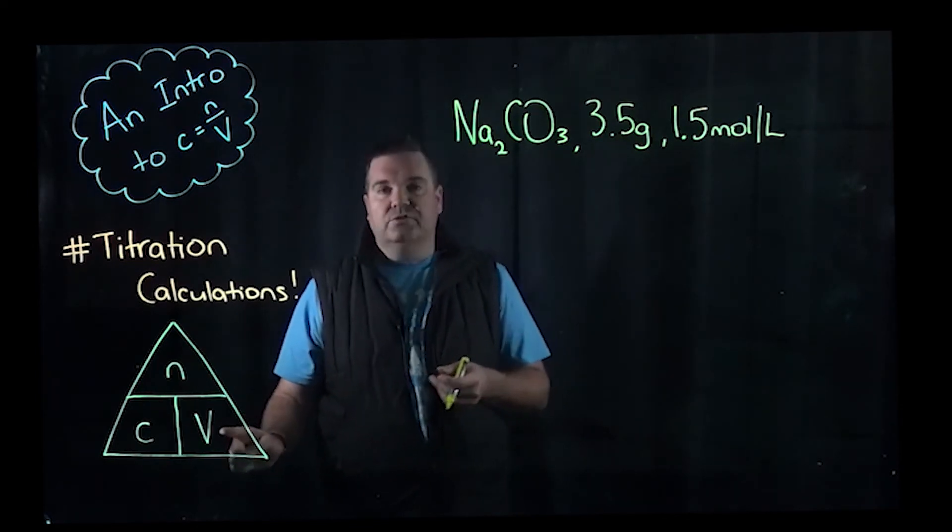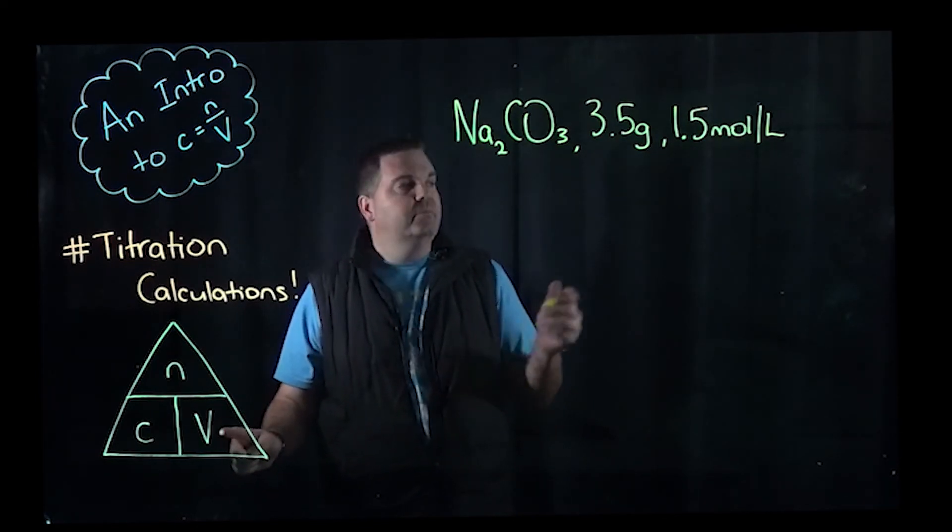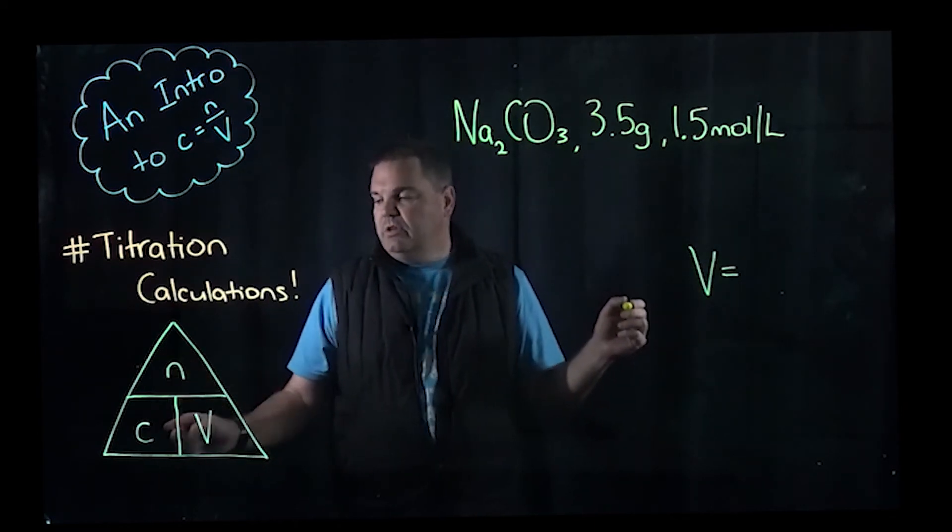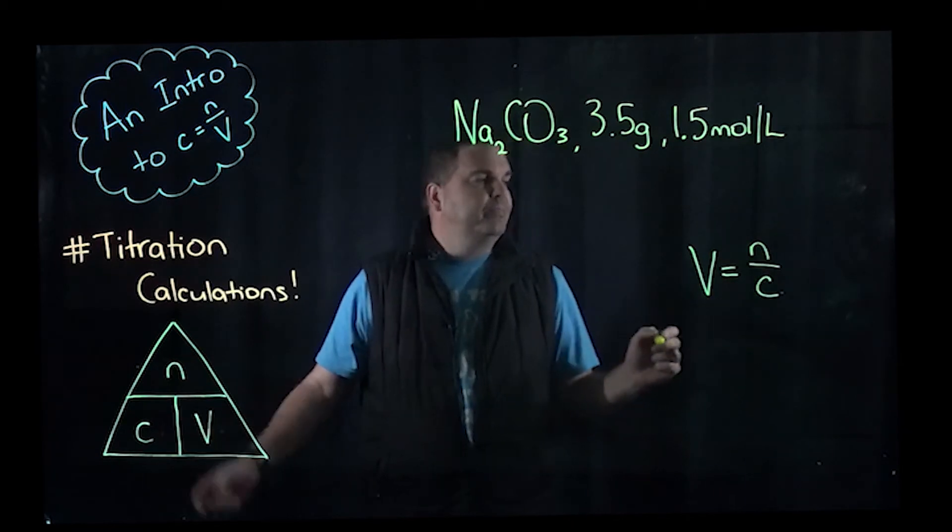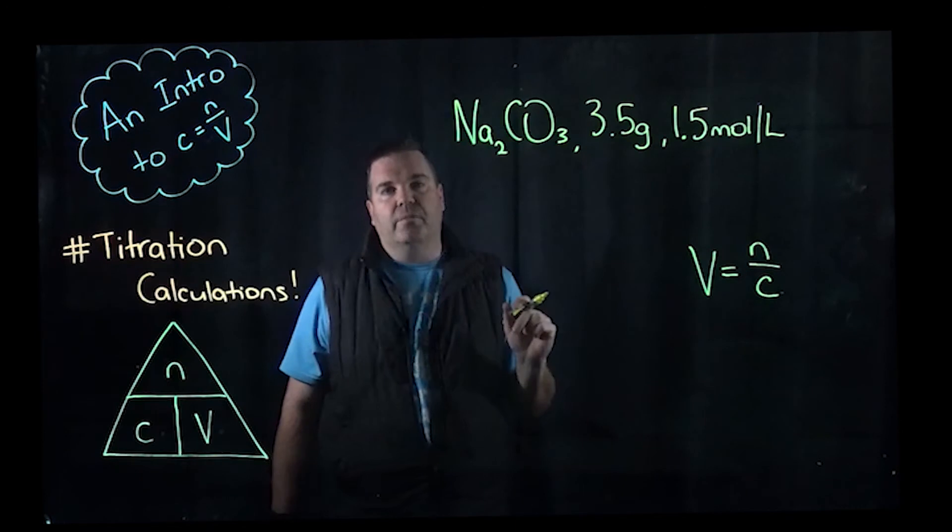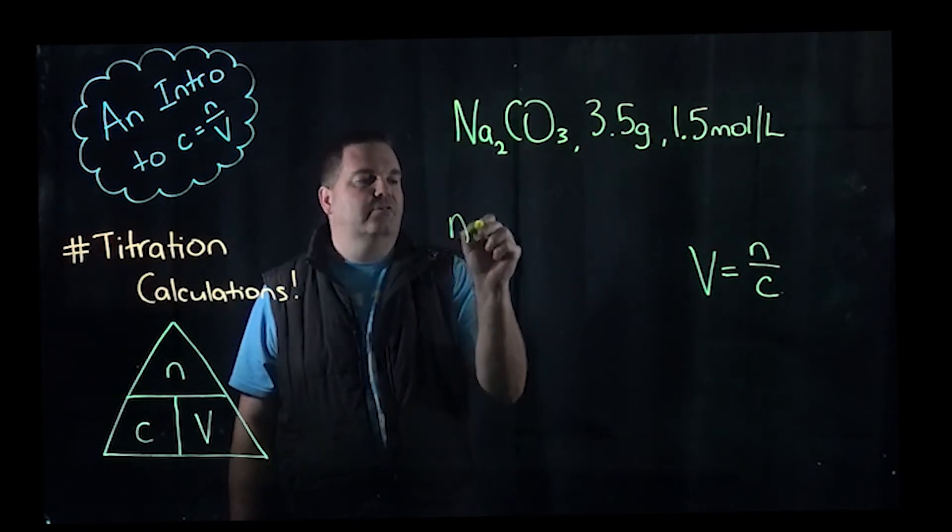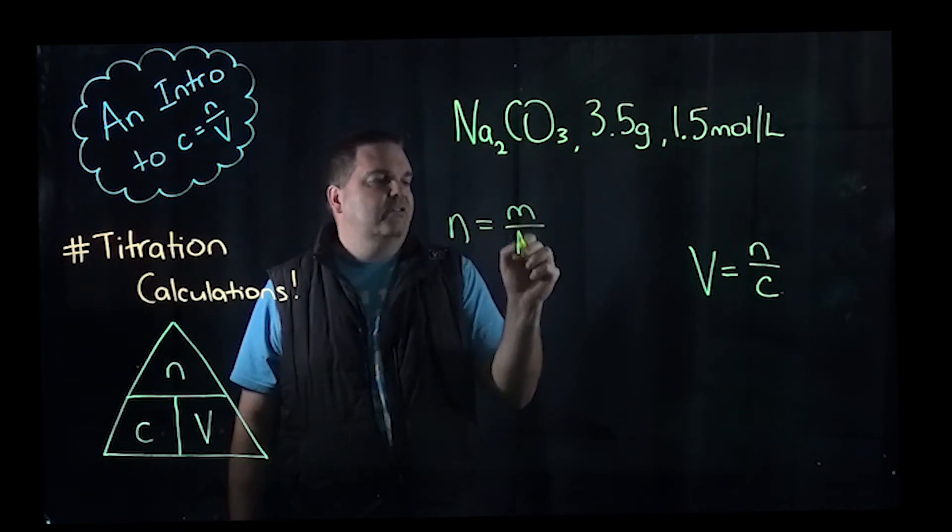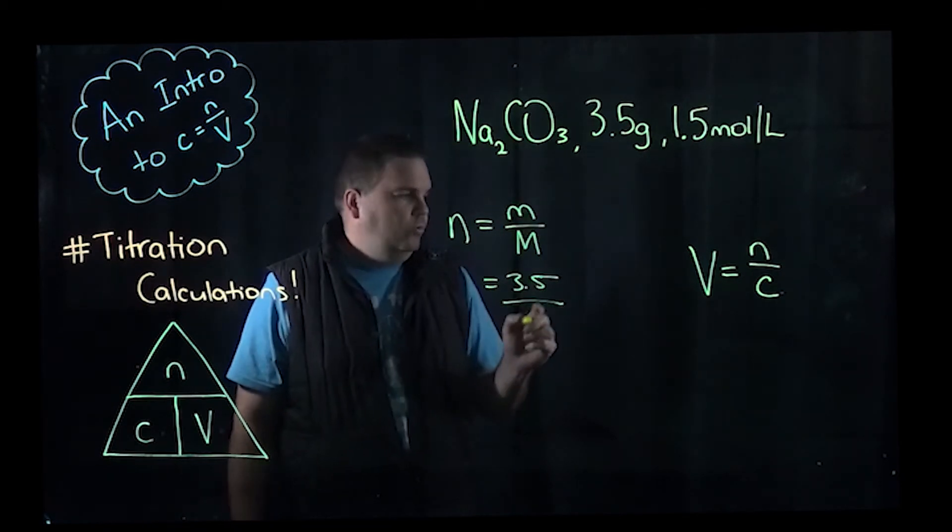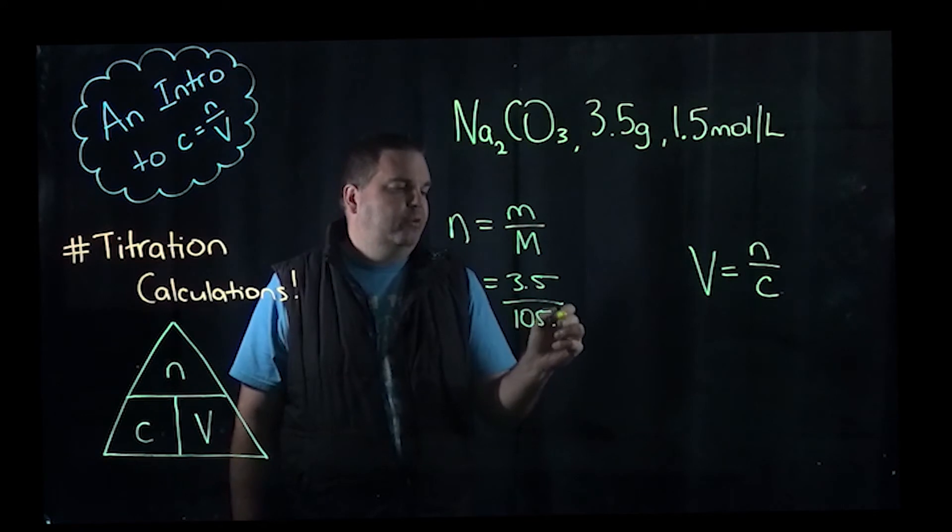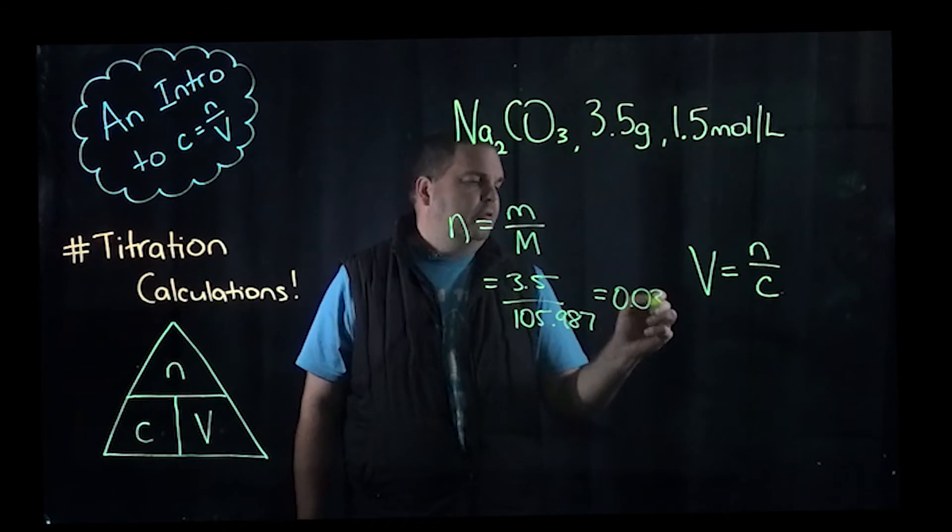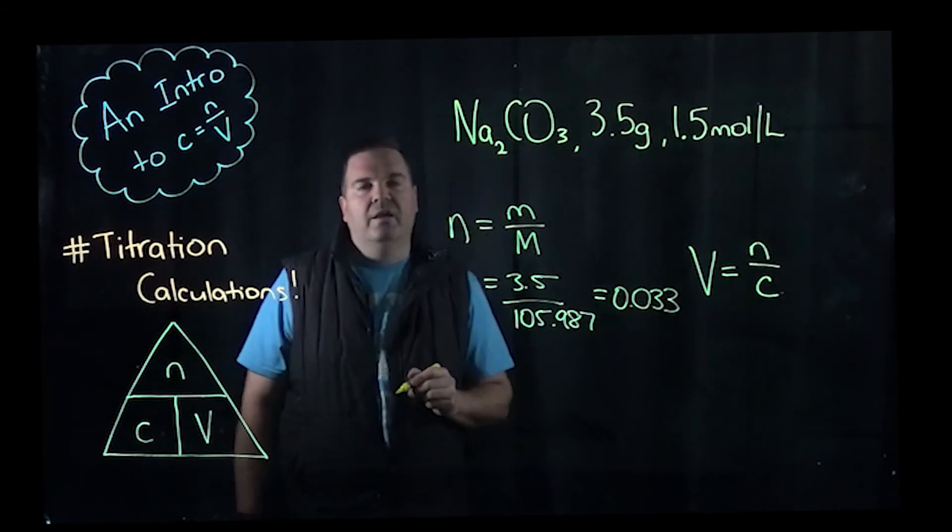So using our triangle again, volume this time is going to equal number of moles over concentration, N over C. So we know concentration is 1.5, but again, we need to get number of moles using mass over molar mass. So you're going to do 3.5 over the molar mass of sodium carbonate, which is 105.987, and we're going to get a value of 0.033 moles.